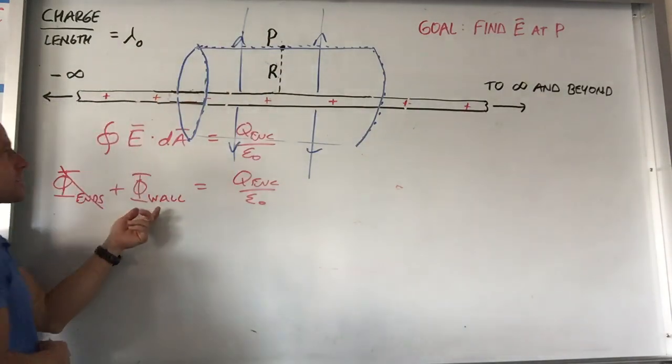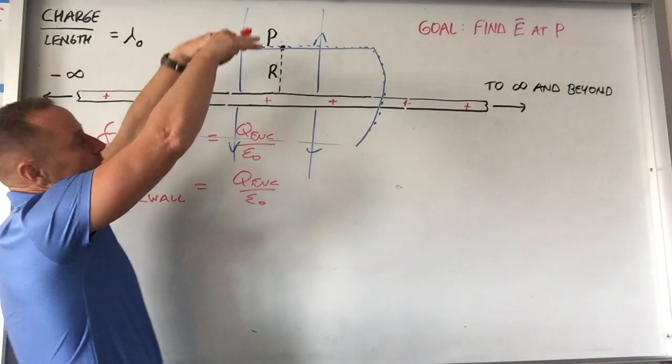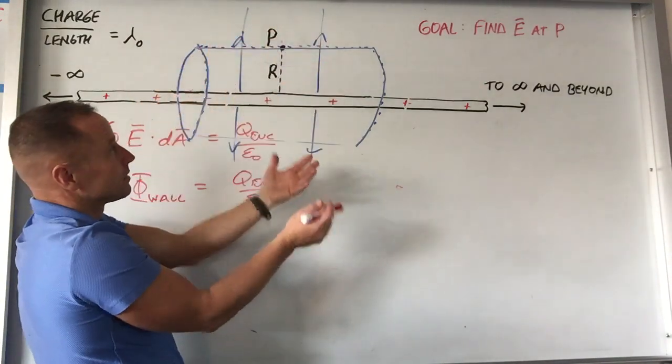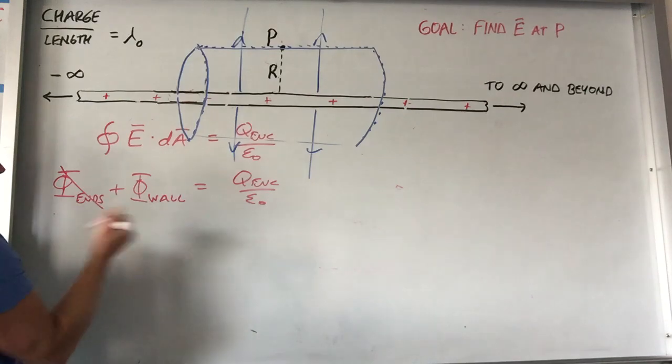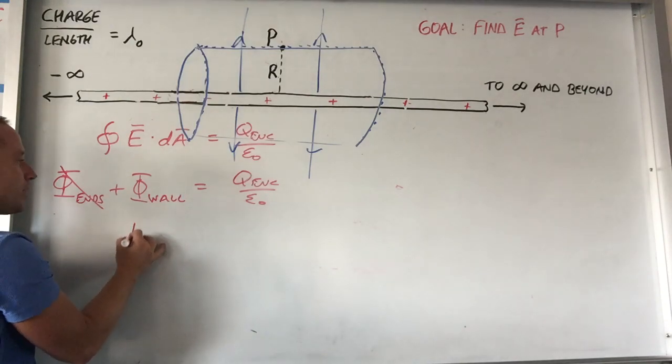Well, so flux, as you know, is field times area. Well, all of the area is perpendicular to the field and the field has a constant magnitude out there. So this is just field times area. It ultimately just boils down to like E A perp, which is just E times, well, the area of that soup can label.